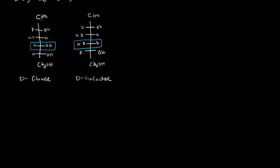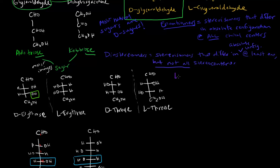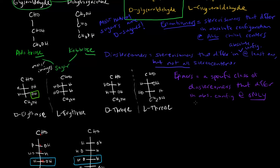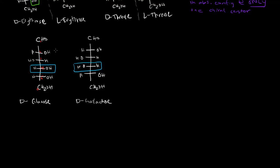Glucose and galactose are diastereomers because they differ in at least one but not all stereocenters. Specifically, they are epimers. Epimers are a specific class of diastereomers that differ in absolute configuration at only one stereocenter. Glucose and galactose are specifically C4 epimers.